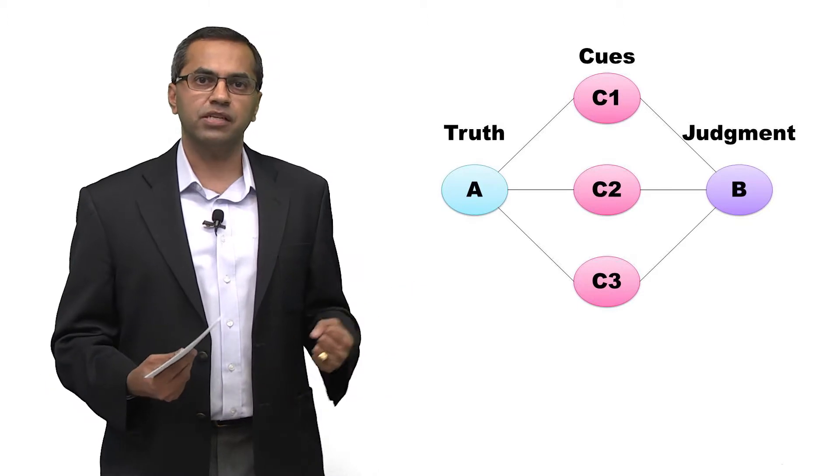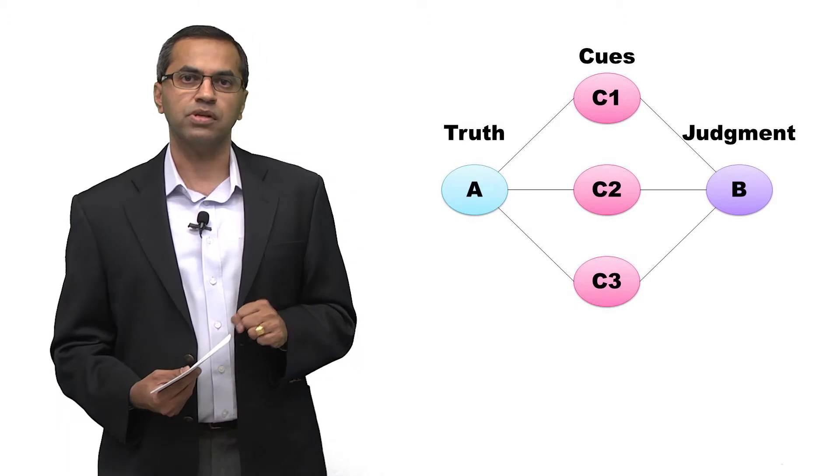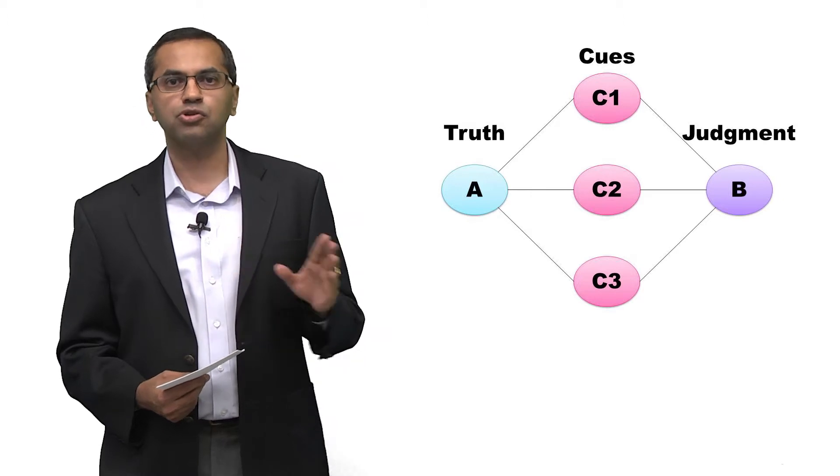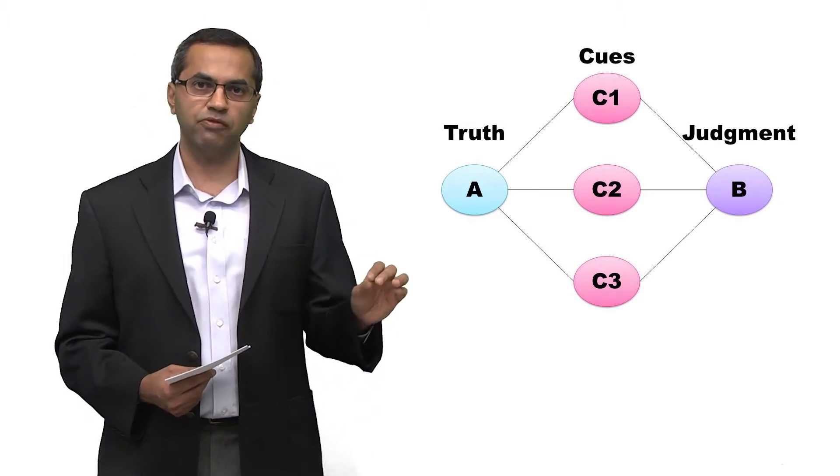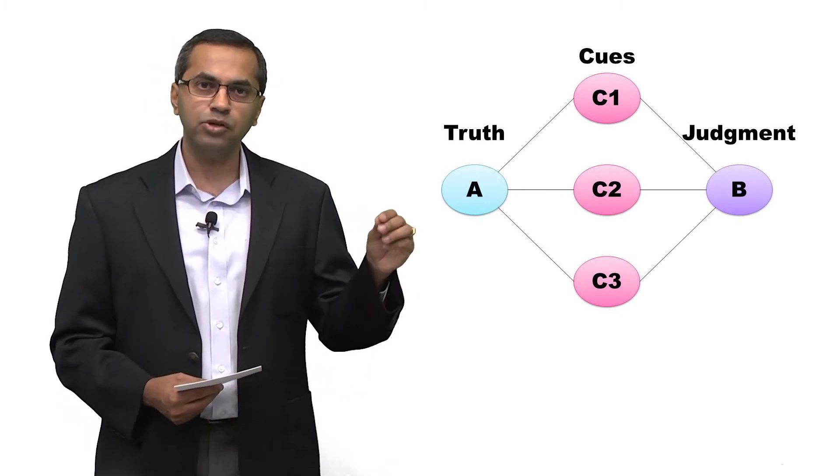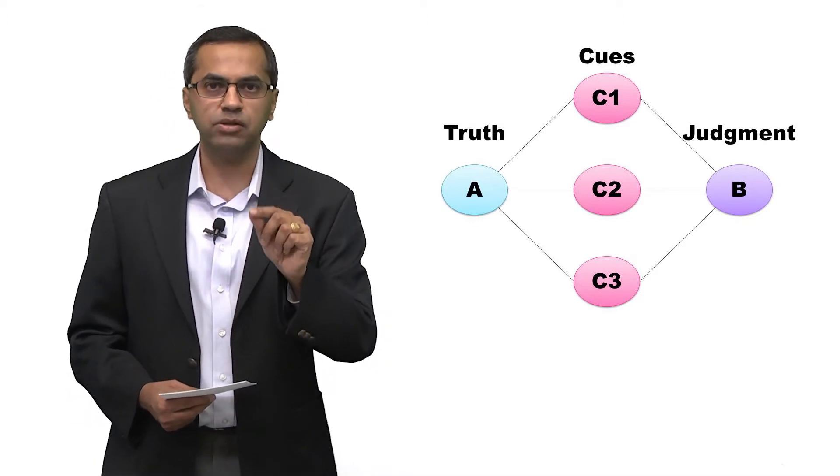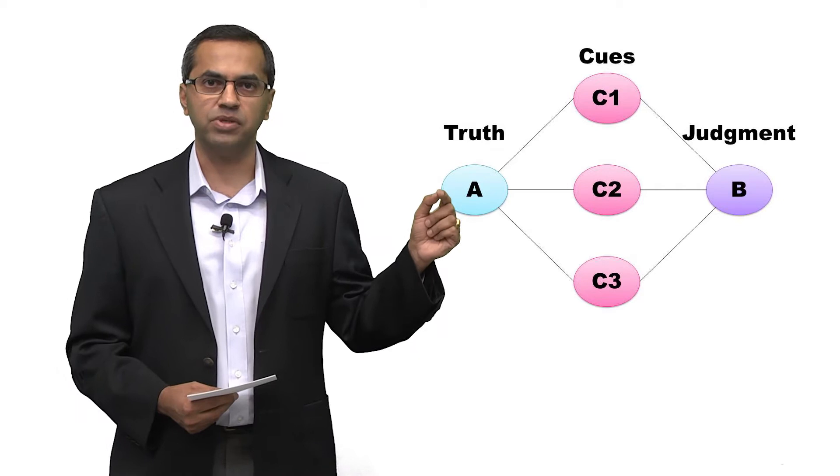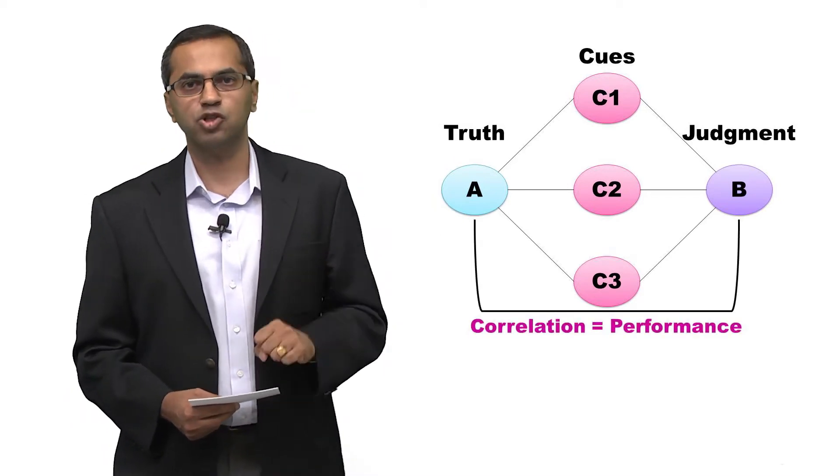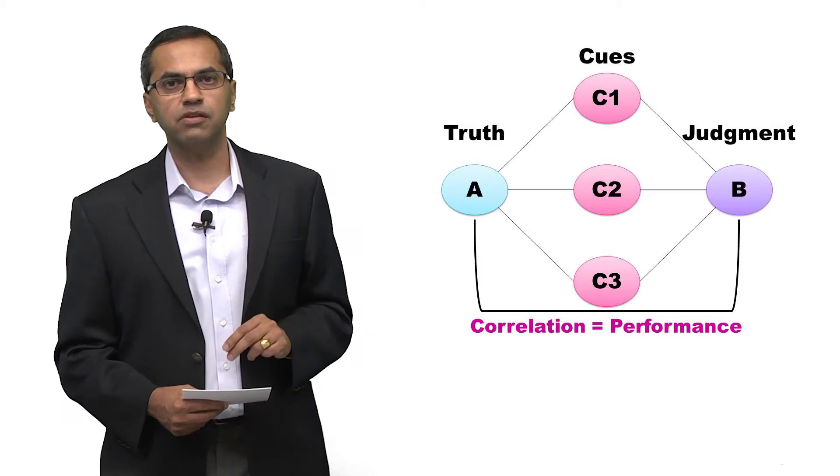So once you have a set of cues, all you then need to do is to look at these cues and form a judgment about the truth. Let's think about an example of a situation where you have a recruiter who is going to try and make judgments about the performance of a given employee over the next three years. If you had true data on the performance, and you measured the correlation between the judgment that the recruiter made today and the actual performance, that correlation is a measure of what we call the performance of the judge. The higher the correlation, the better the judge can actually predict what's going to happen in the future.